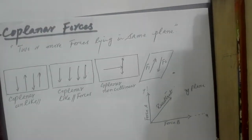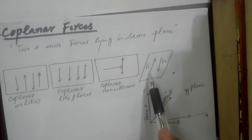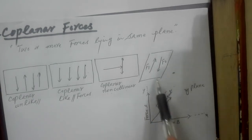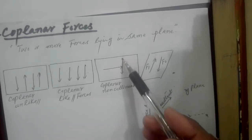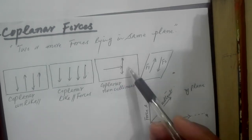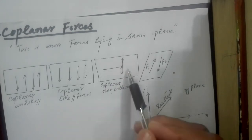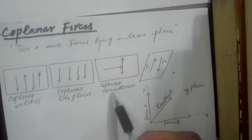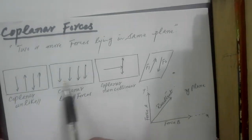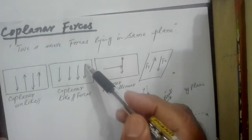Number three: coplanar forces. Two or more forces lying in the same plane are called coplanar forces. Consider a plane in which forces F1 and F2 are acting in different directions but in the same plane — these are coplanar forces. Here, three forces acting in different directions but in the same plane are coplanar and also non-collinear. Four forces acting in the same plane and in the same direction are coplanar and like parallel forces.